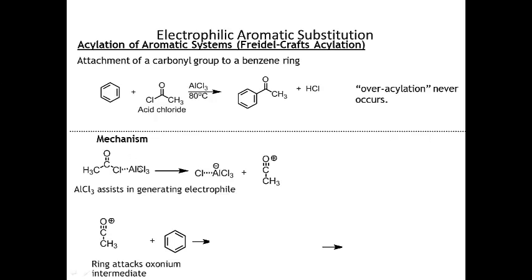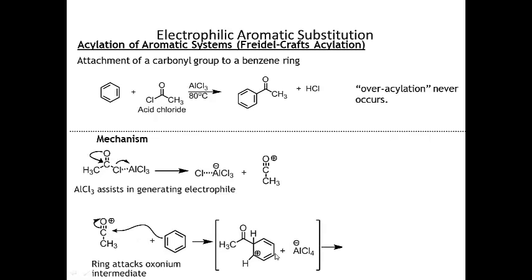The first step in the mechanism is similar to the other two: aluminum chloride activates the acid chloride by ripping off the chlorine, leaving behind an acylium/oxonium ion - this is the electrophile that will be added to the ring. The ring attacks the oxonium ion, generating the arenium ion intermediate - the same intermediate seen in the previous two reactions. Then aluminum tetrachloride acts as a base, deprotonates, puts the double bond back in, and reestablishes aromaticity.